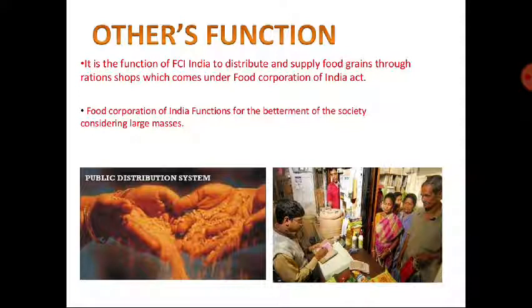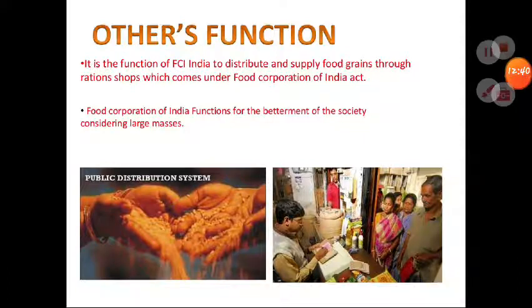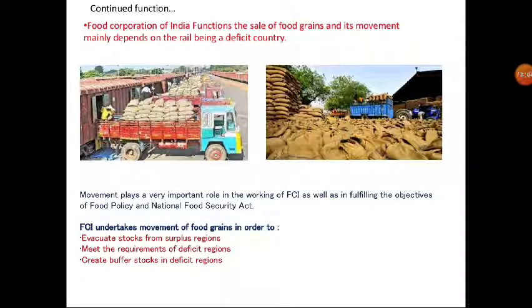FCI functions for the betterment of society by providing millions of tons of food all over India. Earlier, India was importing food grains, but now India is self-sufficient in the production of food grains. During any shortages, it can import from other countries. FCI takes excess or surplus stocks from surplus regions like Punjab and Haryana.